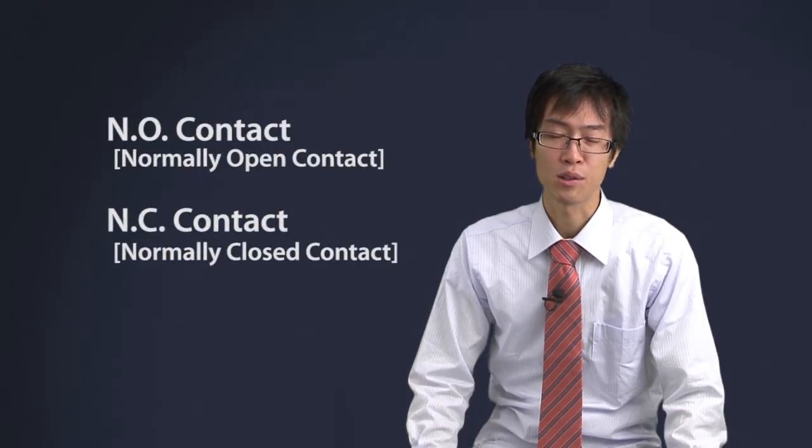To understand the electrical schematic diagram, I should explain about the different types of contacts. The role of contact is to turn a relay or switch on and off. The basic contacts are called Normally Open Contact and Normally Closed Contact.